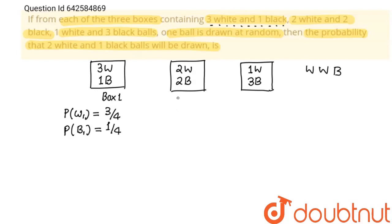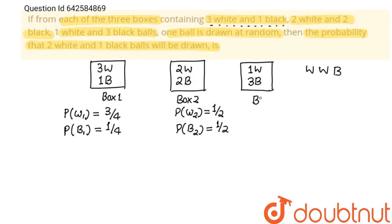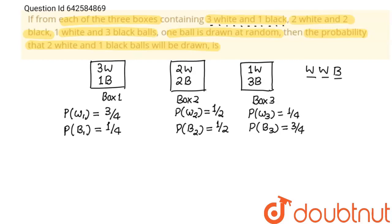From box two, the probability of drawing a white ball is 2/4, which is 1/2, and the probability of drawing a black ball is also 2/4, that is 1/2. From box three, the probability of drawing a white ball is 1/4, and the probability of drawing a black ball is 3/4.